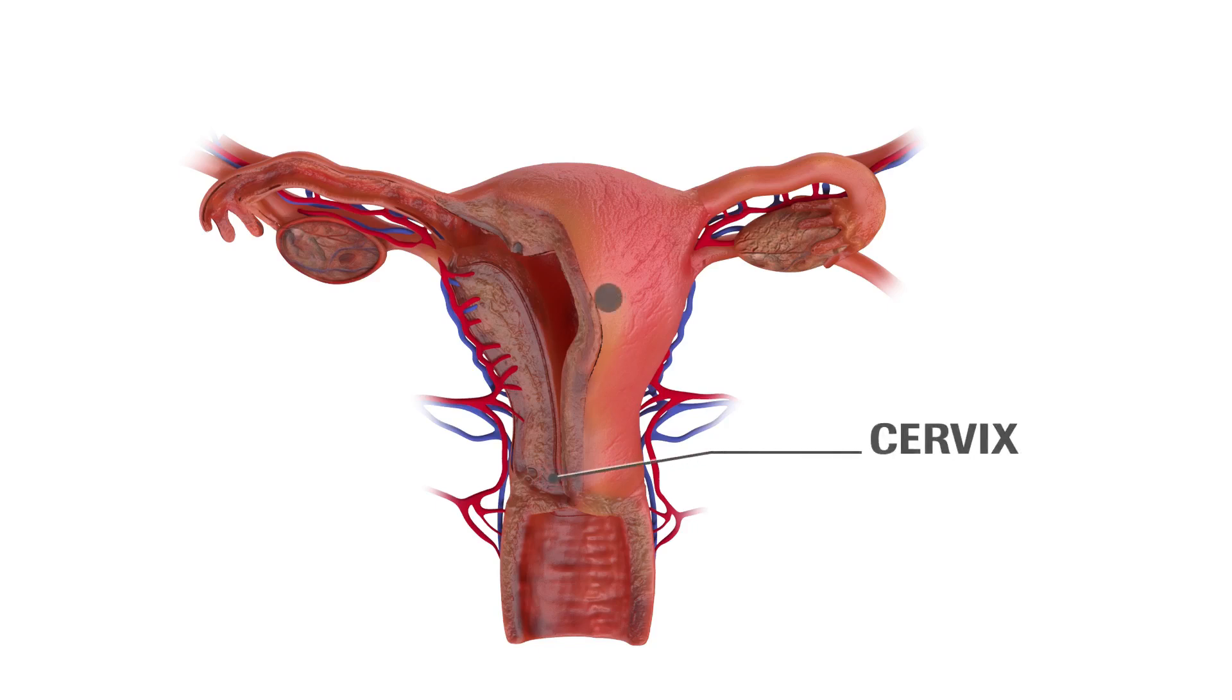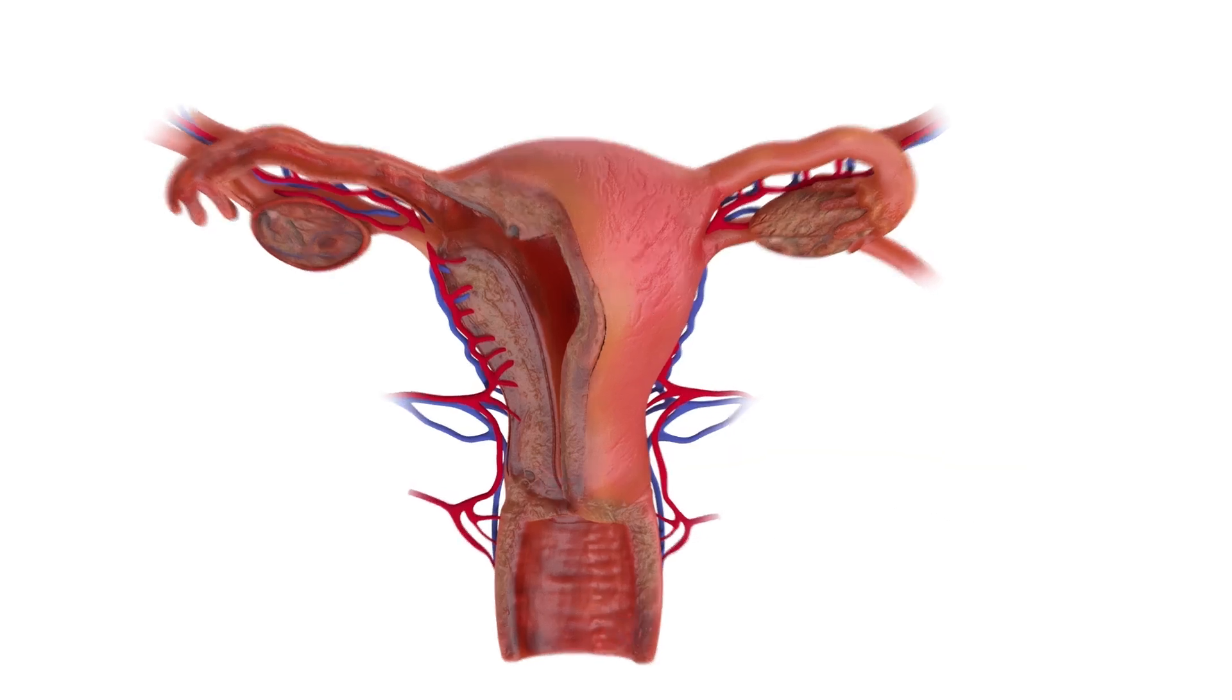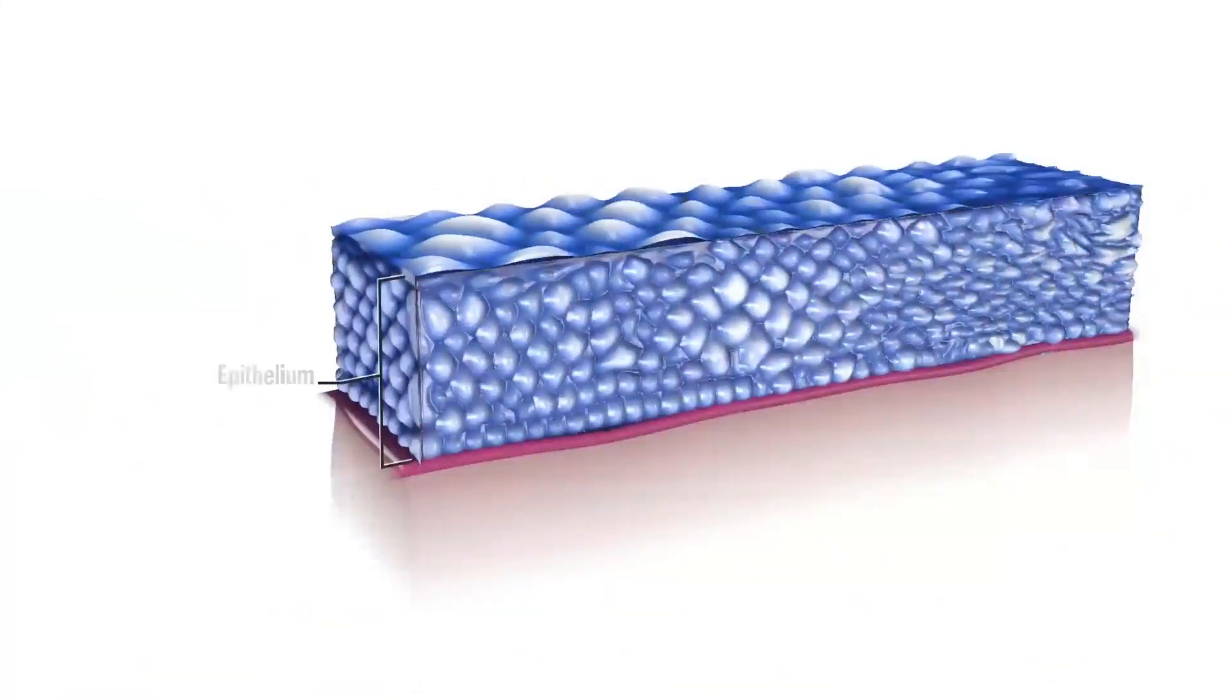The cervix is the lower end of the uterus that extends into the vagina and becomes infected with HPV, typically following sexual contact. The epithelial lining of the cervix consists of stratified squamous epithelial cells,